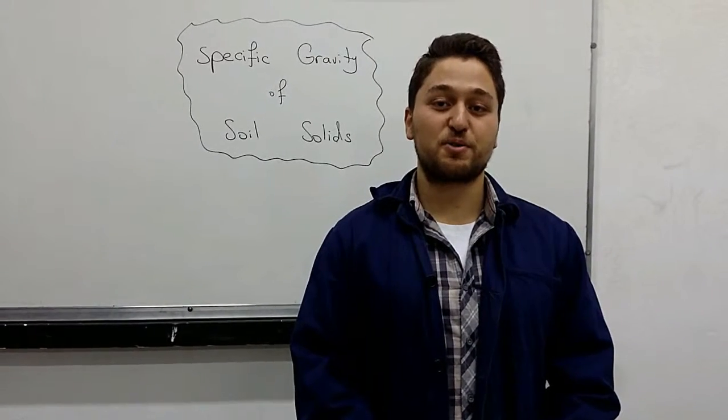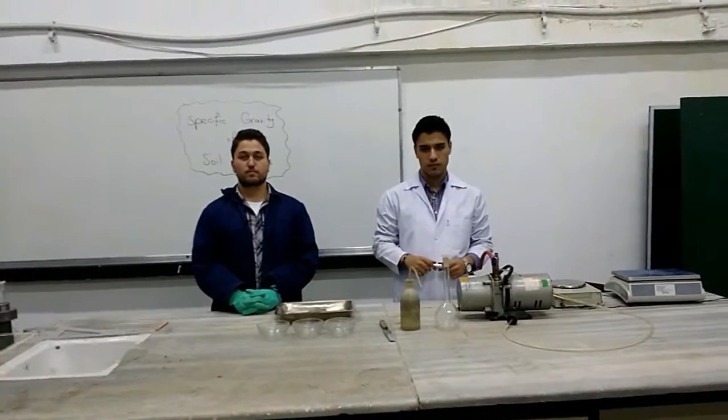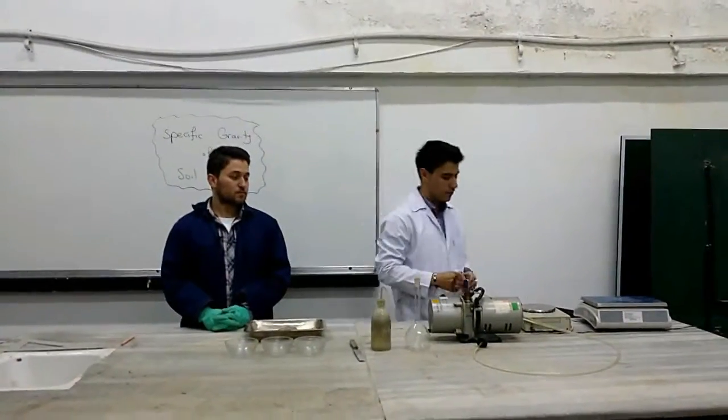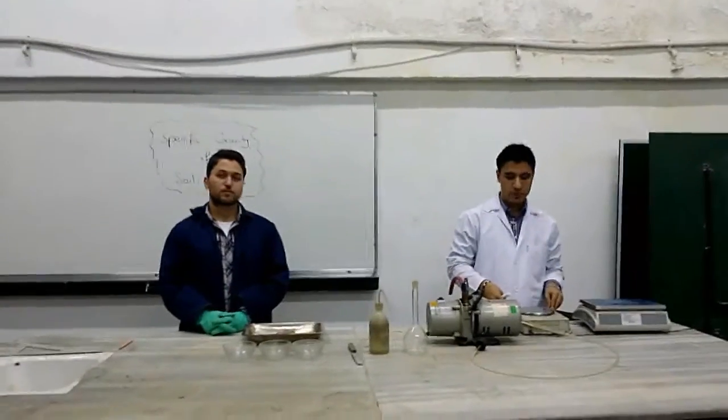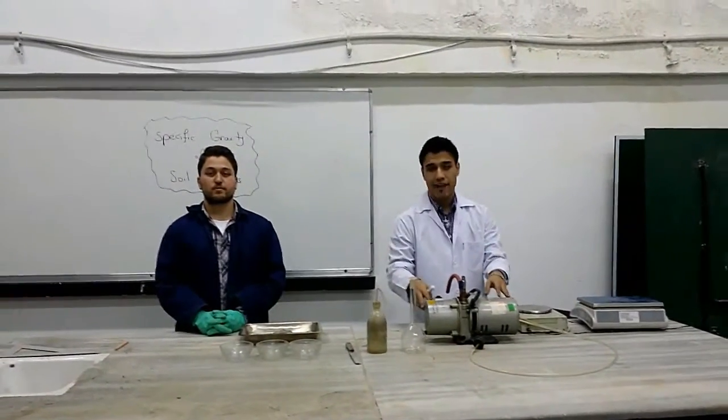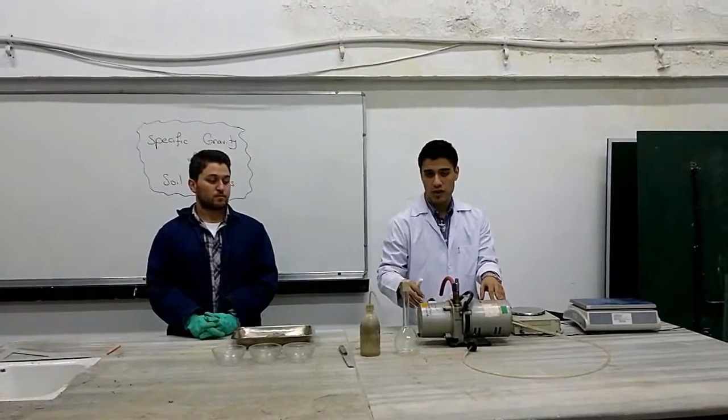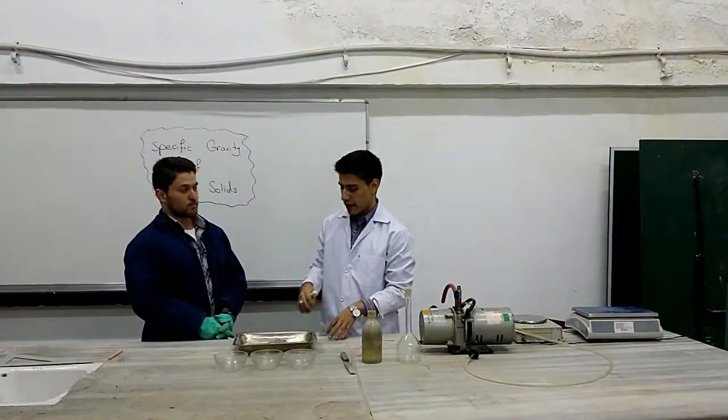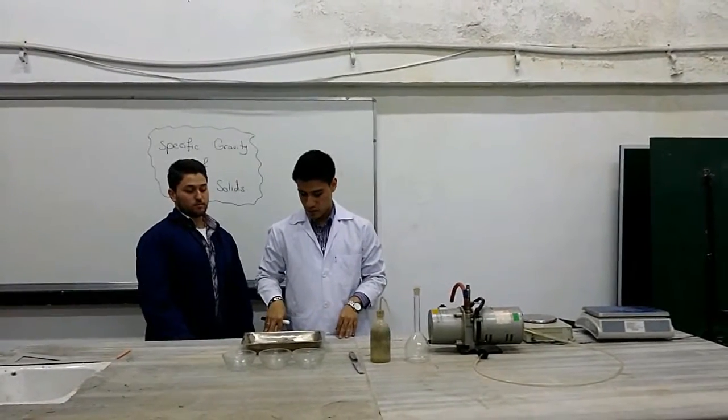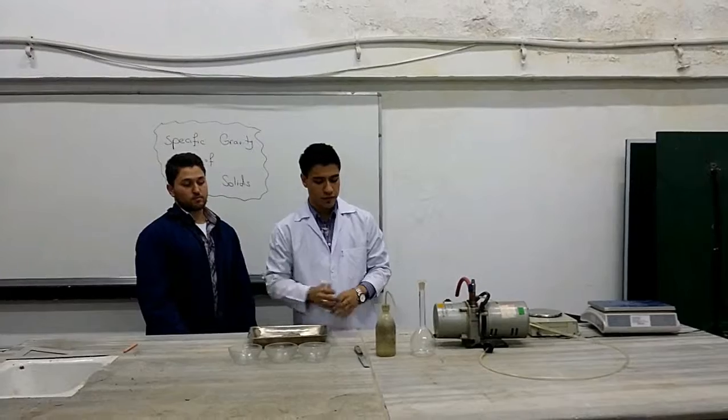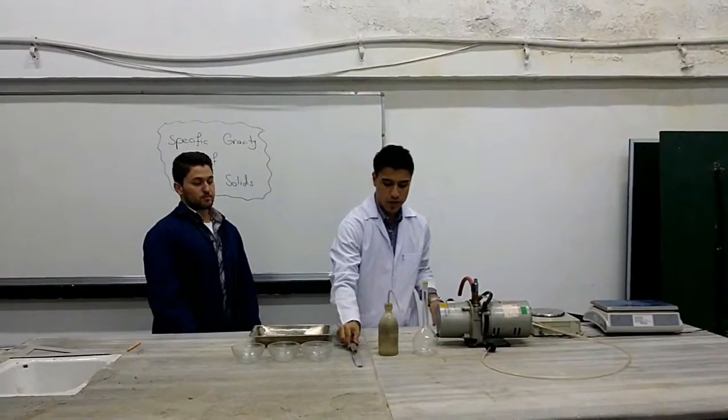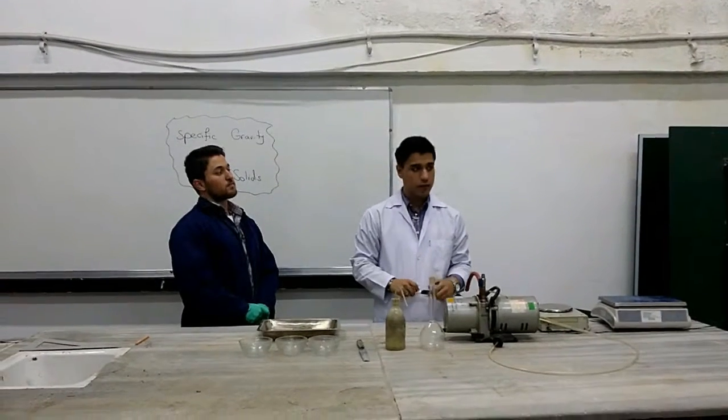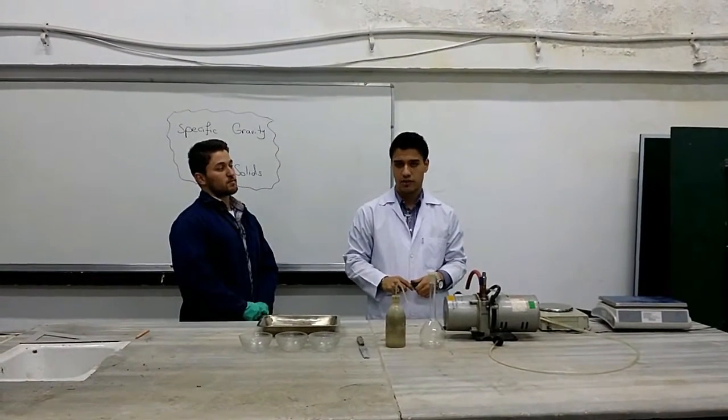So what equipment are we going to use today? Well, we have the volumetric flask here. We have the balance with the precision of 0.01 grams. We have the vacuum pump that we are going to use to extract the air entering the soil. We have a sample of air-dried soil. We have our evaporating dishes here. We have the spatula. We have a plastic squeeze bottle filled with distilled water. And we are going to use the thermometer and the oven later on.